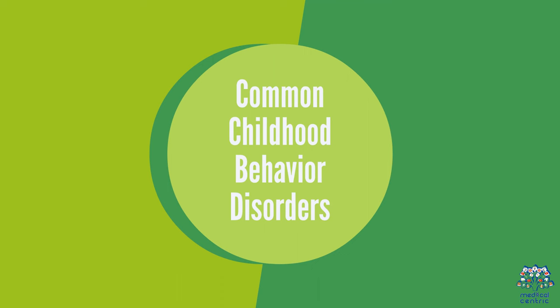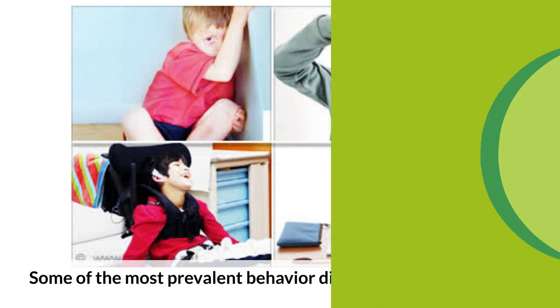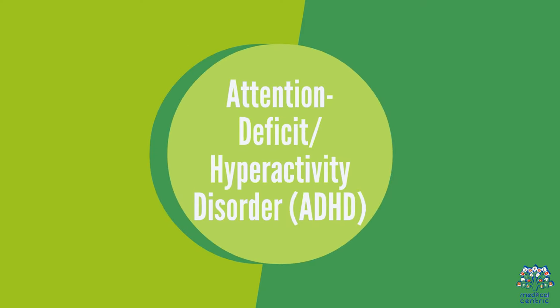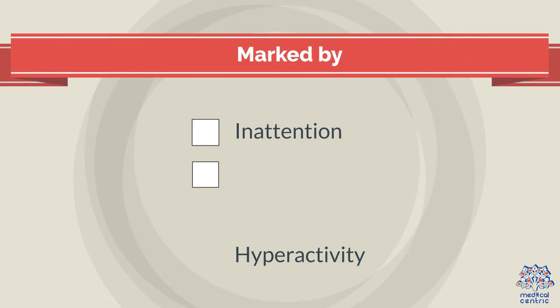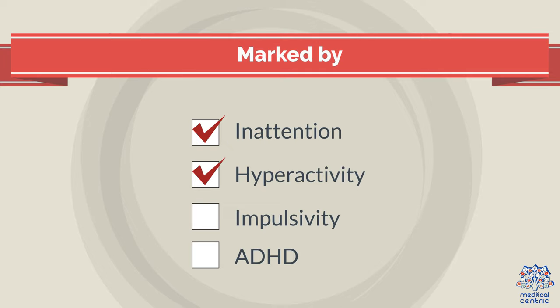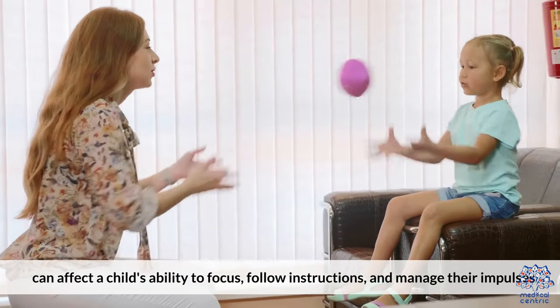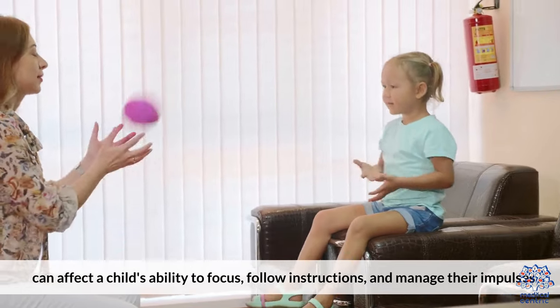Common Childhood Behavior Disorders. Some of the most prevalent behavior disorders in children include Attention Deficit Hyperactivity Disorder, ADHD, marked by inattention, hyperactivity, and impulsivity. ADHD can affect a child's ability to focus, follow instructions, and manage their impulses.